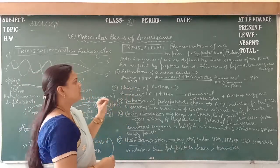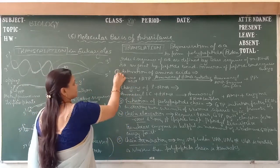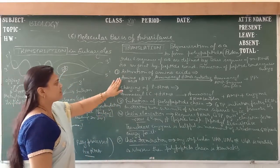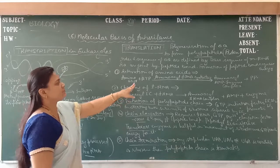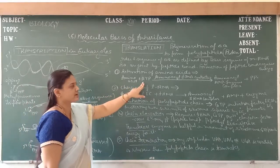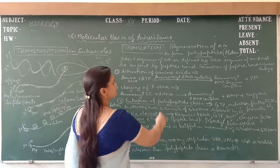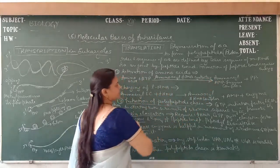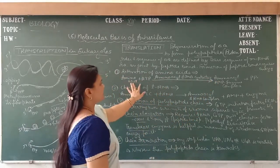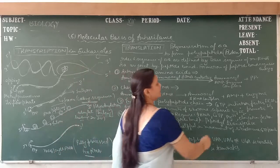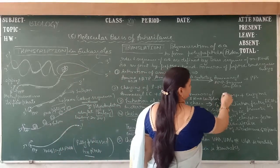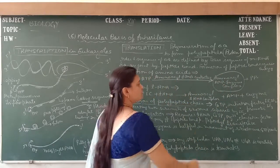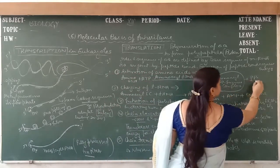The first step of translation is the activation of amino acids. Amino acids are activated with the help of ATP — adenosine triphosphate — in the presence of the aminoacyl-tRNA synthetase enzyme. These amino acids are converted into an amino acid adenylate-enzyme complex, releasing two phosphate molecules.